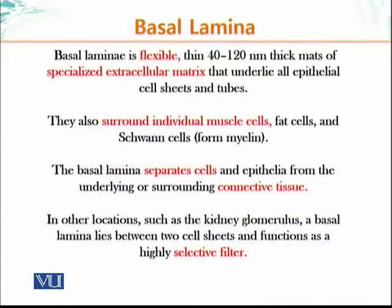Basal lamina is a flexible, thin, 40 to 120 nanometer thick mat of specialized extracellular matrix that underlies all epithelial cell sheets and tubes. They also surround individual muscle cells, fat cells, and Schwann cells, which are responsible for making the sheet around peripheral nerves and isolating these nerves from other cells.